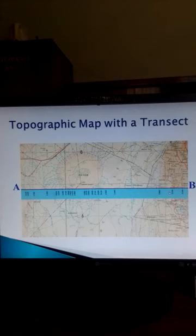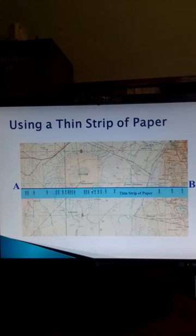We are required to draw the cross-section of this map along this transect. To do that, we take a thin strip of paper and place it along the transect. So this is the thin strip of paper which is placed along the transect AB.